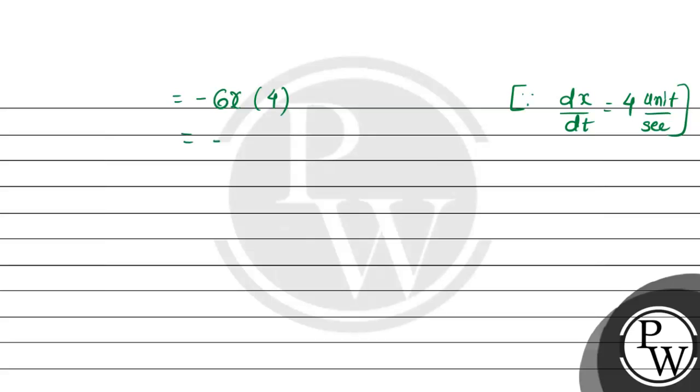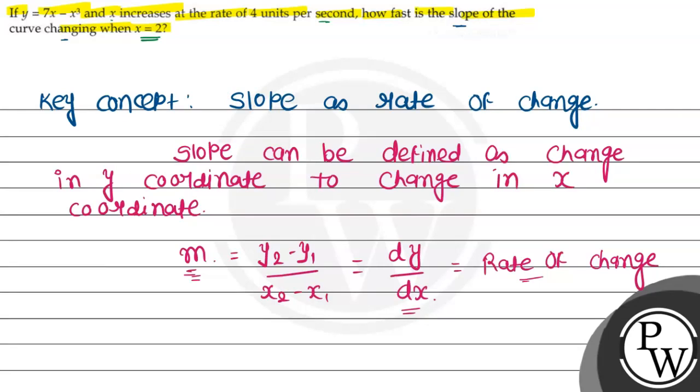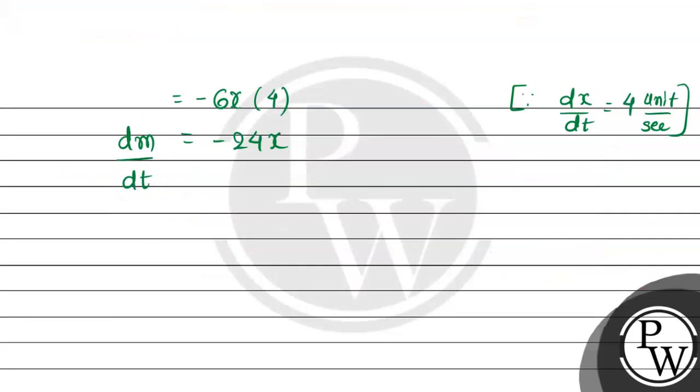So, that equal to minus 24x. We got dm upon dt, but we need dm upon dt when x is equal to 2.